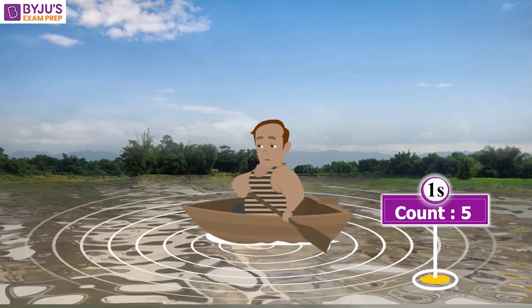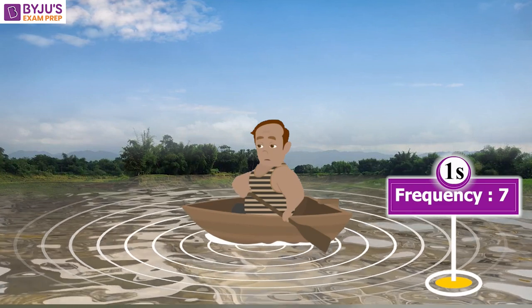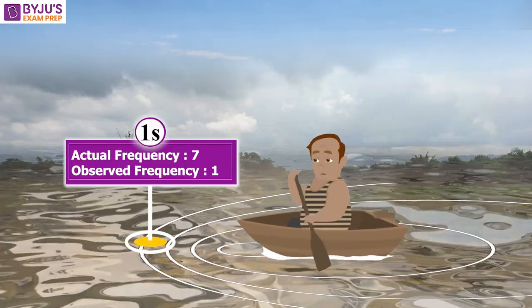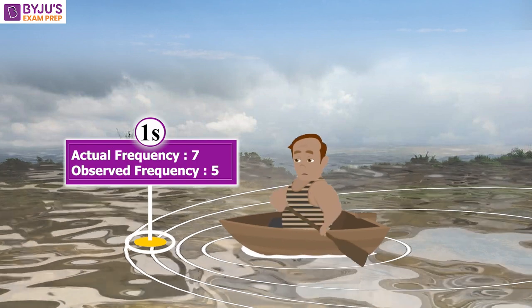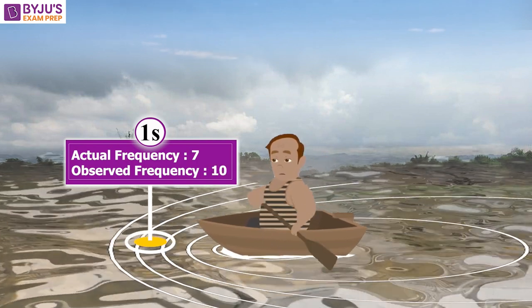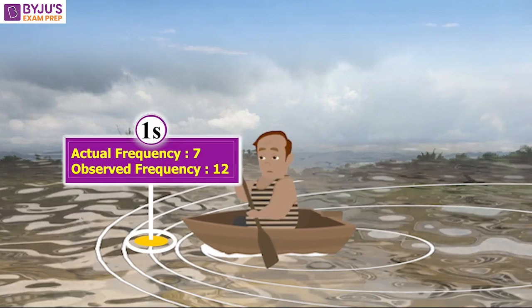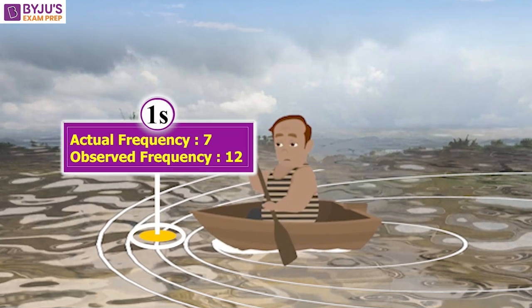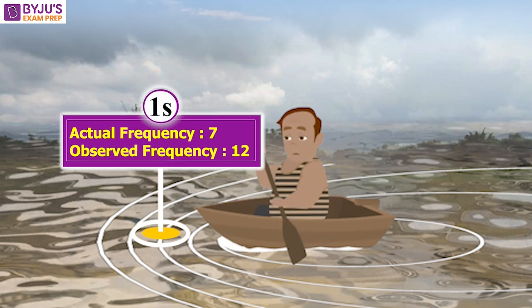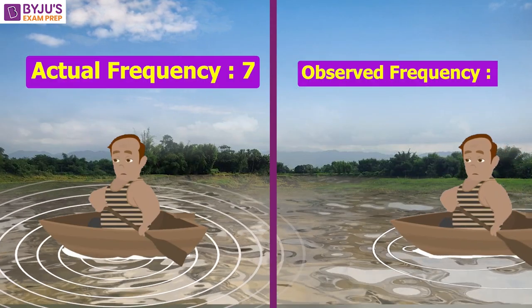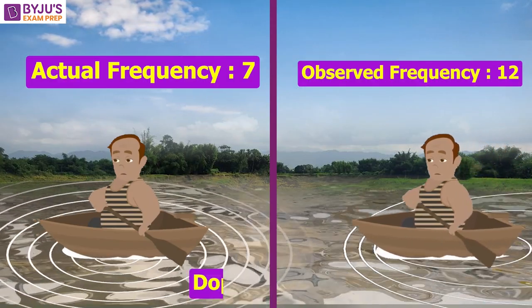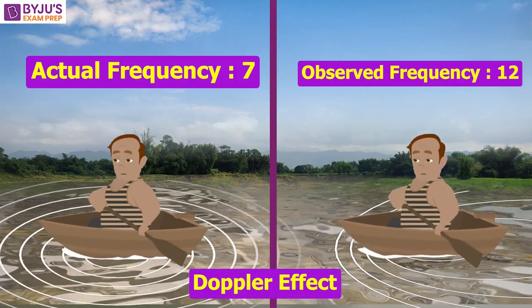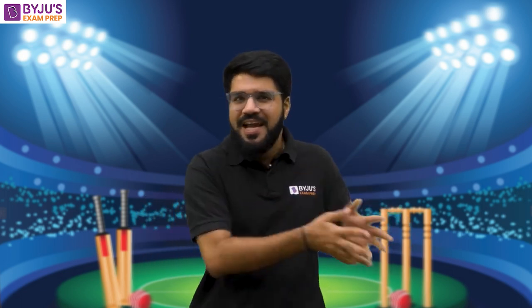Say the frequency is seven. Now when the boat moves forward, an observer in front of the boat will observe waves that are closer together — that is, with more frequency — and an observer behind will observe less frequency. That is the Doppler effect: the observed frequency when the source is moving towards an observer is higher than the actual frequency.